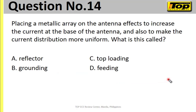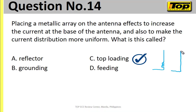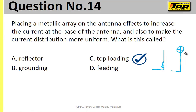Let's move on to number 14. Placing a metallic array on the antenna has the effect of increasing the current at the base of the antenna and making the current distribution more uniform. What is this called? The answer is letter C — top loading. We have several types of loading: base loading (at the base), center loading (at the center), and top loading (at the top).